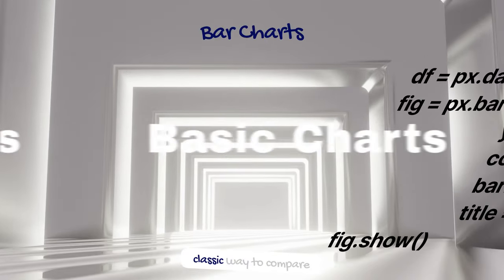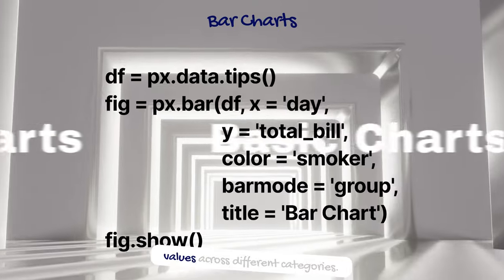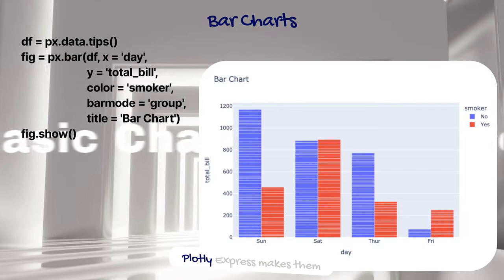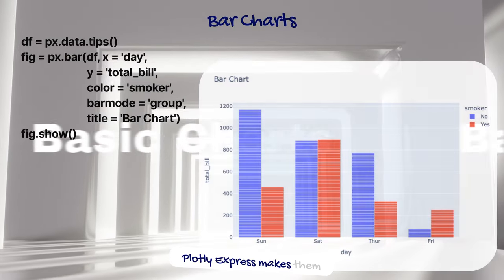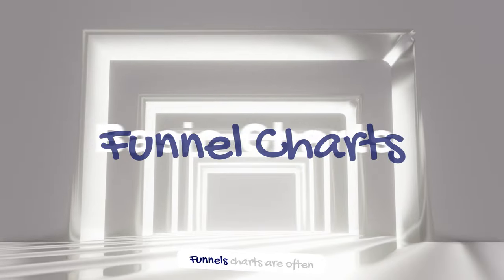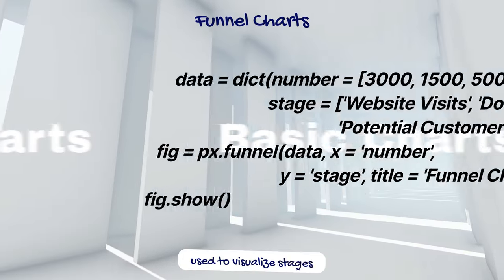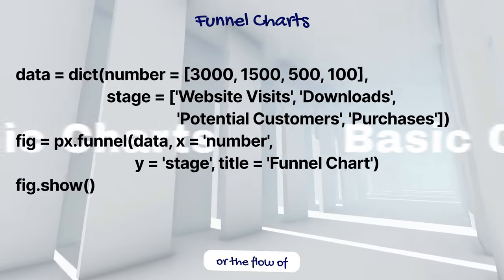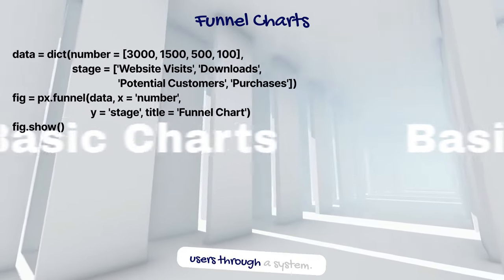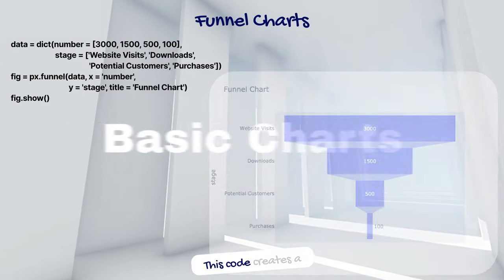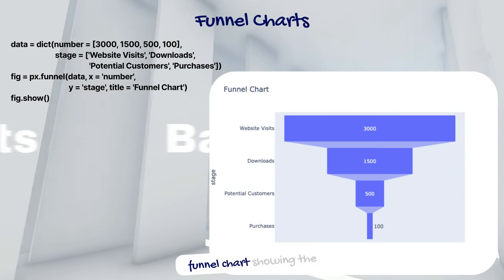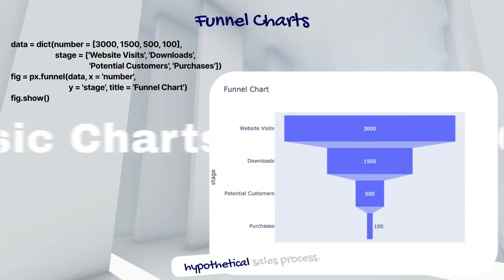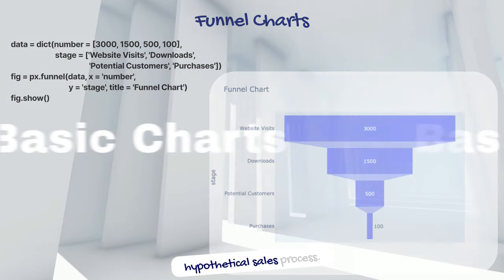Bar charts are a classic way to compare values across different categories. Funnel charts are often used to visualize stages in a sales process or the flow of users through a system. This code creates a funnel chart showing the number of users at each stage of a hypothetical sales process.